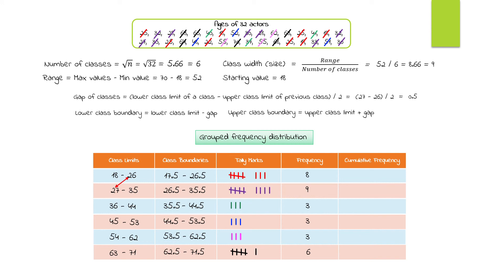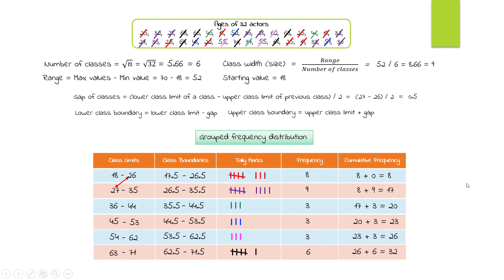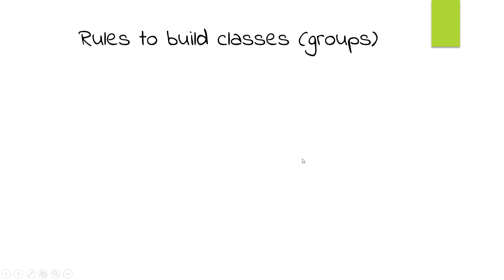Let's do the cumulative frequency, which is the running total: 8 plus 0 is 8; 8 plus 9 is 17; 17 plus 3 is 20; and so on. The last cumulative frequency must equal the number of observations, which is 32.